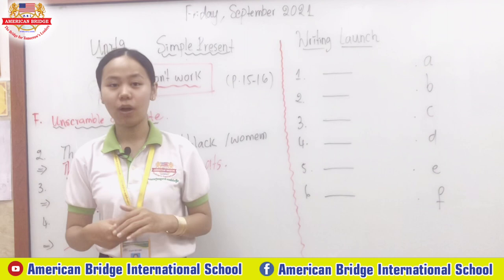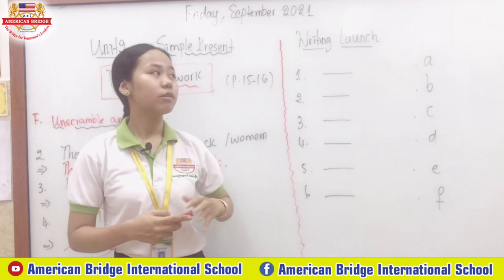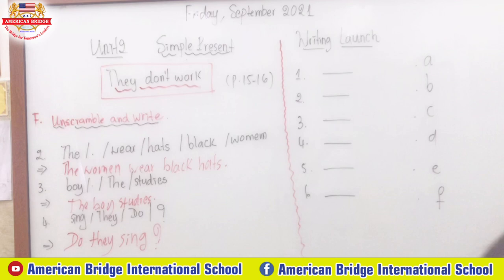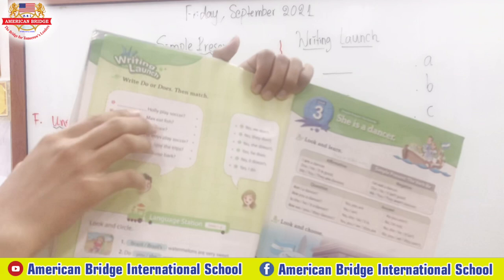That is it for section F, everyone. Teacher hopes you got the correct answers. Now without further ado, let us move to another section on page 16, which is Writing Launch. You can open your book to page 16. You will write 'do' or 'does' and then match the sentences.